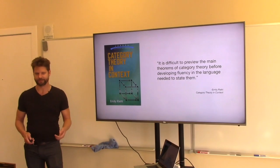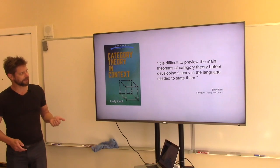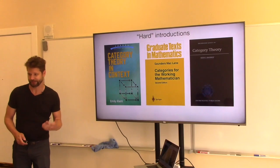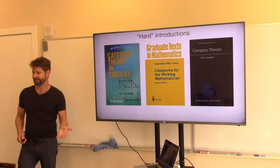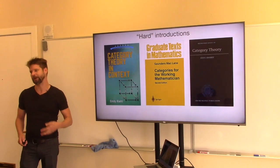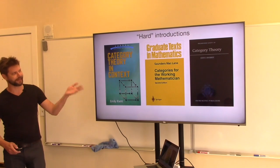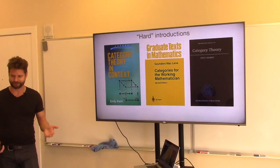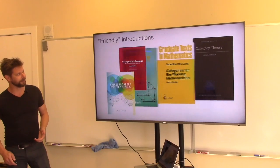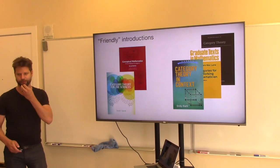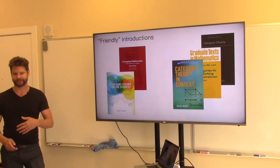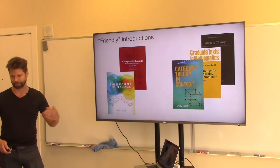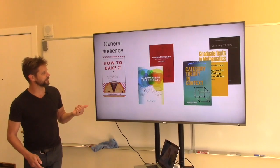In terms of learning category theory, there are books like Emily's and others — I'd consider these 'hard introductions' in the sense that the presumptive audience is mathematicians expected to know algebraic topology, logic, and abstract algebra. There are also more friendly introductions like Conceptual Mathematics by Lawvere, and David's book, which take a broader sense of audience. The only real general-audience book I know is Eugenia Cheng's How to Bake a Pie.